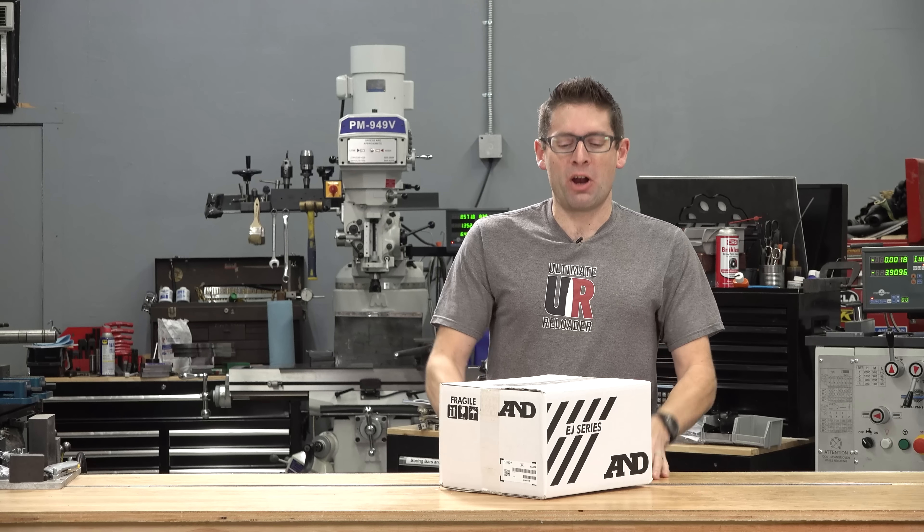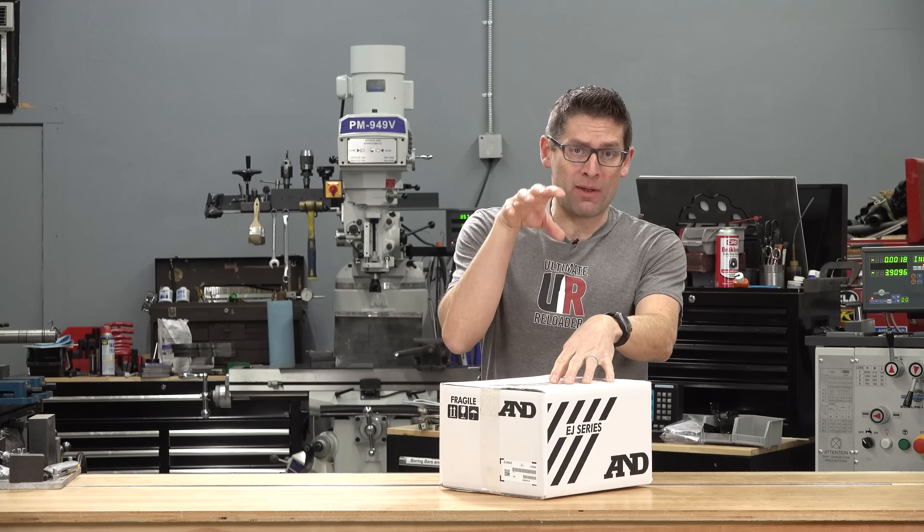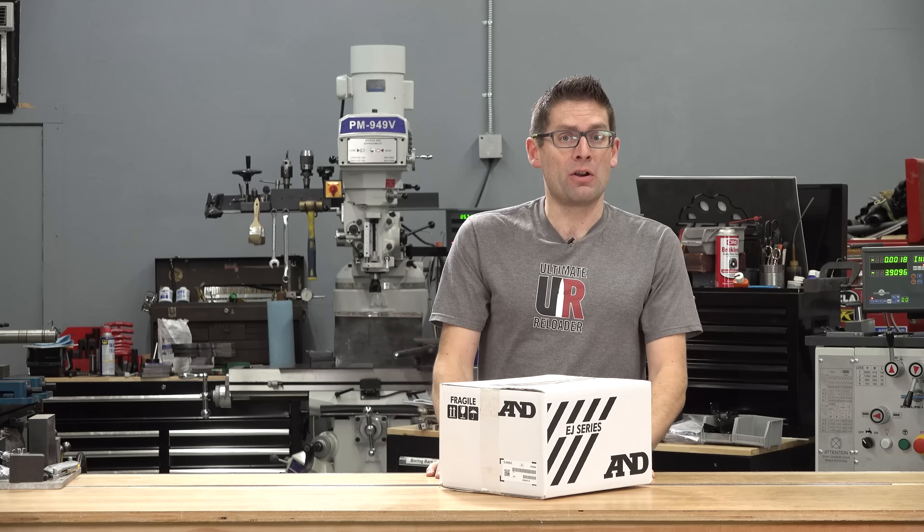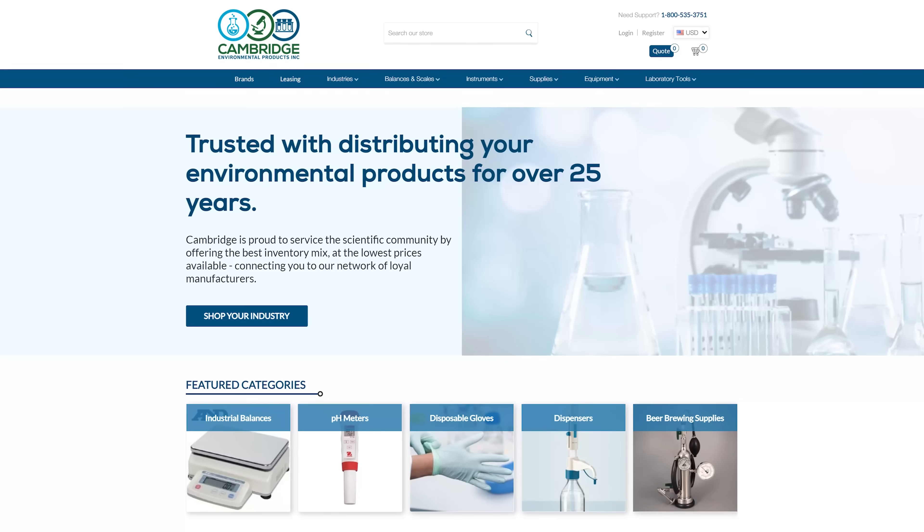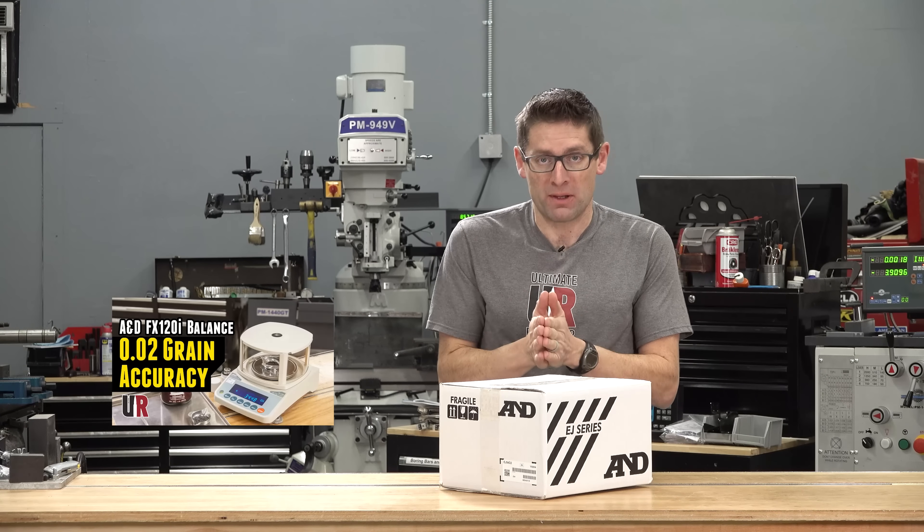Gavin here from UltimateReloader.com. This is the EJ54D2 from A&D. I've recently partnered with Cambridge Environmental. They sell lab balances like the A&D FX120i that I use on a frequent basis.